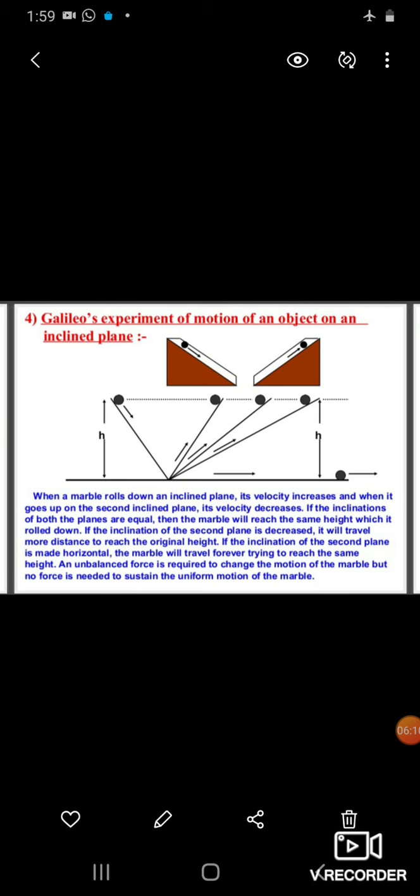Galileo's experiment of motion of an object on an inclined plane: Galileo tried an experiment with motion on an inclined plane. He observed that if the inclination is less, the force required is also greater, and the ball at lesser inclination reaches a greater height.